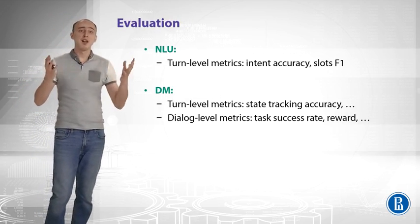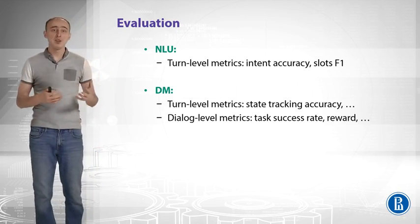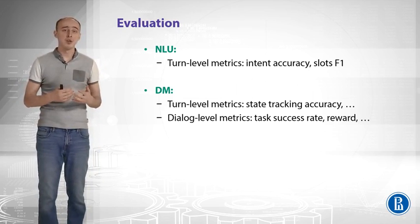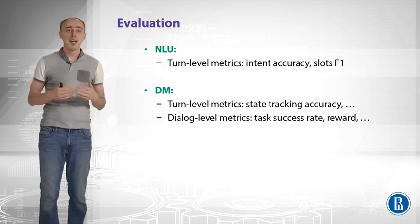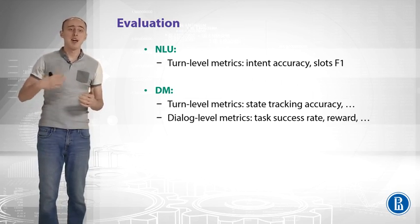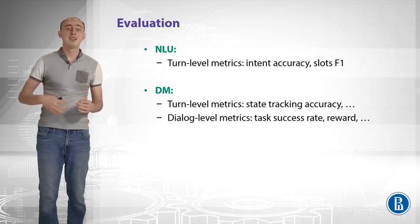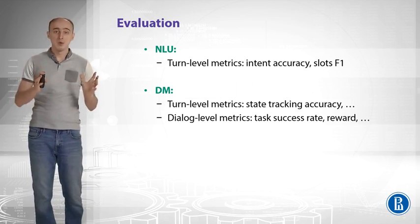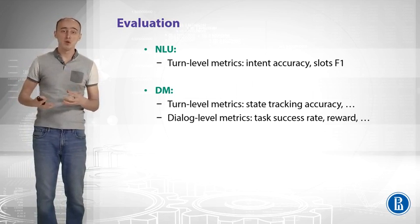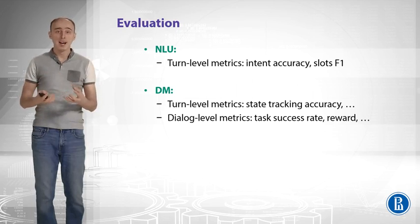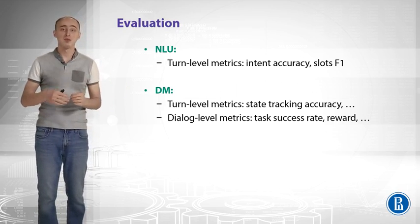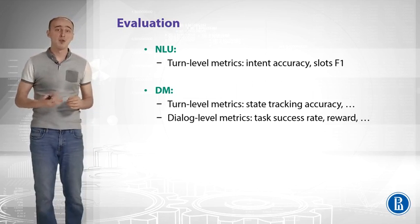Let me remind you how we evaluate NLU and Dialog Manager. For NLU, we use turn-level metrics like Intent Accuracy and Slots F1. For Dialog Manager, there are two kinds of metrics. The first is turn-level metrics — after every turn in the dialog we track, for example, State Accuracy or Policy Accuracy. And there are dialog-level metrics like Success Rate — whether this dialog solved the problem of the user or not — or what reward we got when we solved the user's problem. The reward could be the number of turns, and we want to minimize turns so that we solve the task faster.